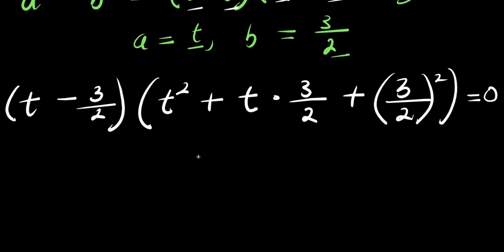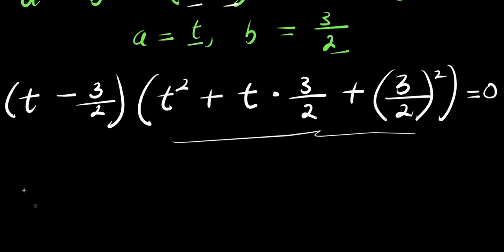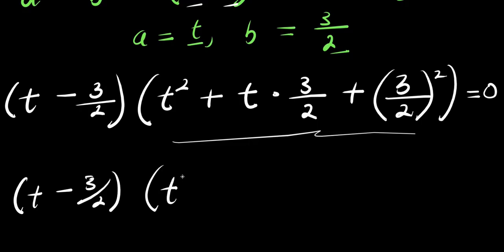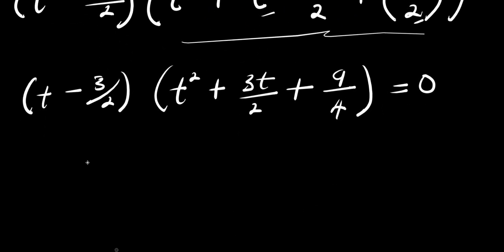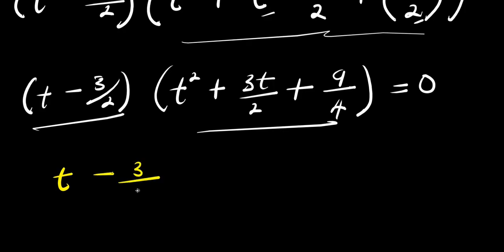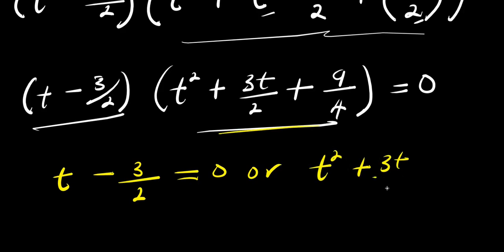Simplifying: we still have t minus 3 over 2, times t squared plus 3t over 2 plus 9 over 4, and this equals 0. Setting each factor equal to zero gives: t minus 3 over 2 equals 0, or t squared plus 3t over 2 plus 9 over 4 equals 0.